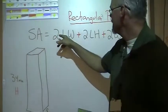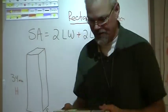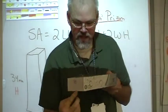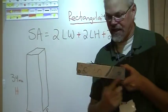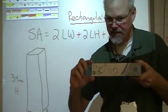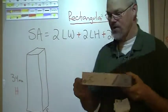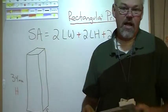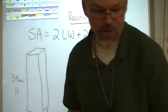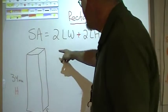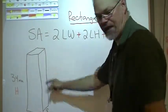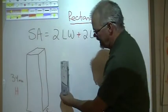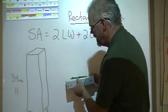It's 2 times the length times the width—this could be the length and this is the width—then 2 times the length times the height, and then 2 times the width times the height. Let's do an example. You got one on your note sheet.